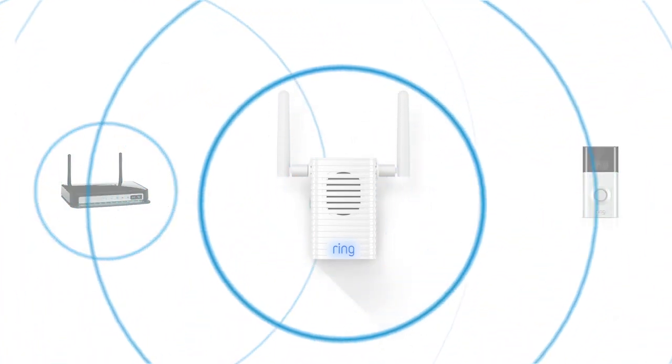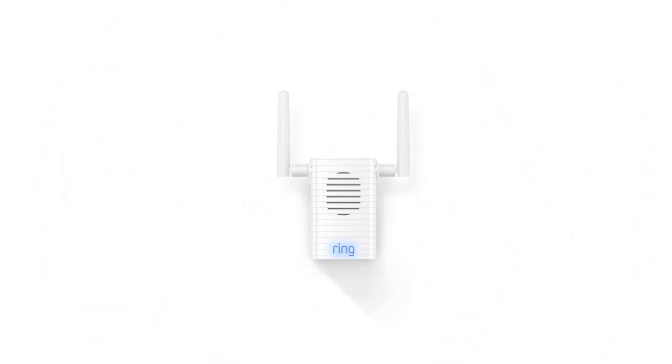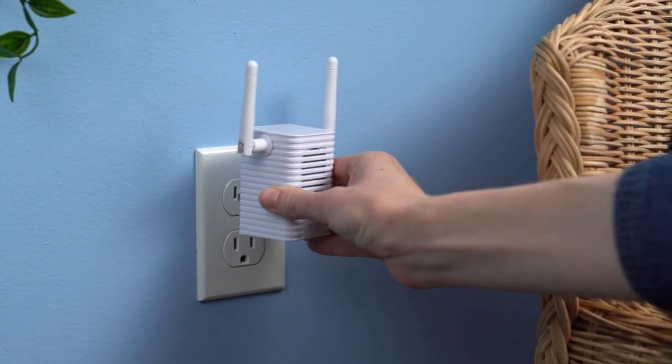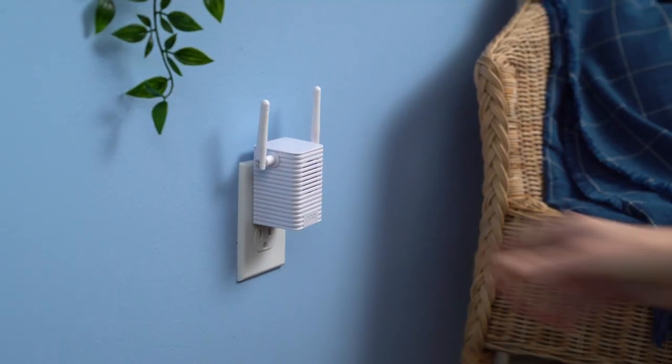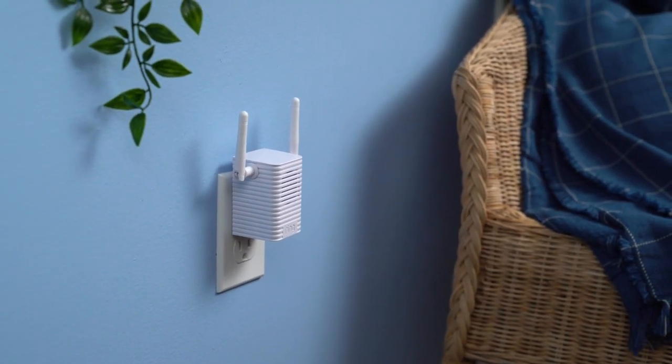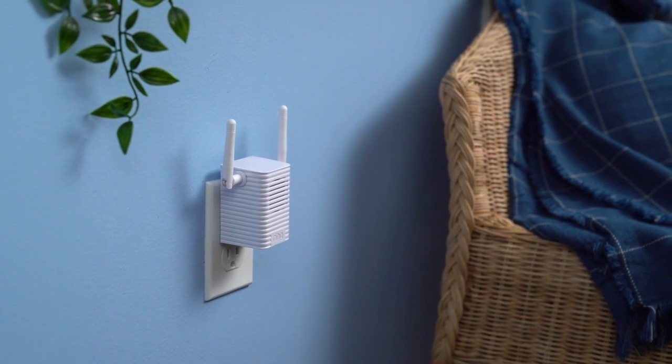Now that you know what your Chime Pro does, let's get it up and running. Plug your Chime Pro into a power outlet. This doesn't have to be the outlet you'll eventually choose. It just needs to be within the range of your Wi-Fi router.